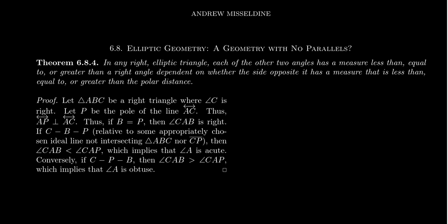Something similar to the best approximation theorem that is going to be useful for our considerations. In a right elliptic triangle, each of the other two angles has a measure that's less than, equal to, or greater than a right angle, depending on whether the side opposite has a measure that is less than, equal to, or greater than a polar distance. So if we have a right triangle, we can compare the sides of a triangle, and we can say that they're either acute, right, or obtuse, based upon how the opposite side of that angle measures to the polar distance, which is a fixed number for the entire geometry.